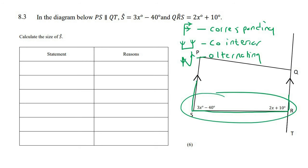So here we have the U, cointerior. Now with cointerior angles, they are not the same, but they add up to 180.